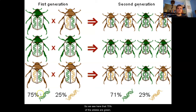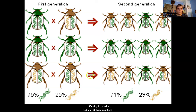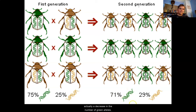We see here that 75% of the alleles are green and 25% are brown. Where did that number come from? When you look, there are three brown alleles out of 12 total — three out of 12 is one-fourth, or 25%. In the second generation, because the predator sees the green beetle more easily than the brown, there's a decrease in the number of green alleles but an increase in the number of brown alleles.